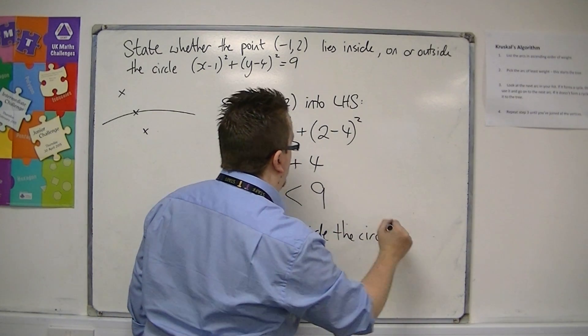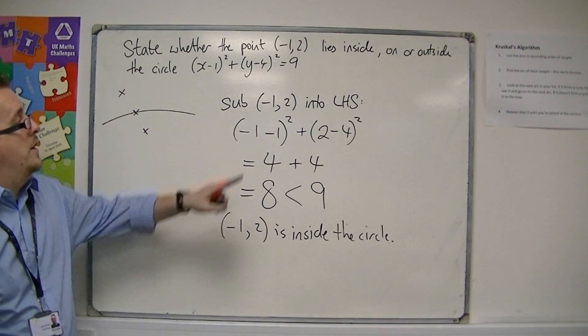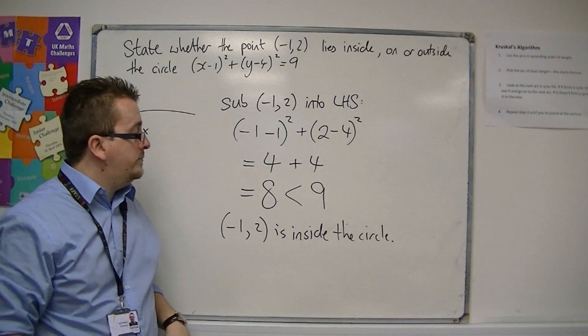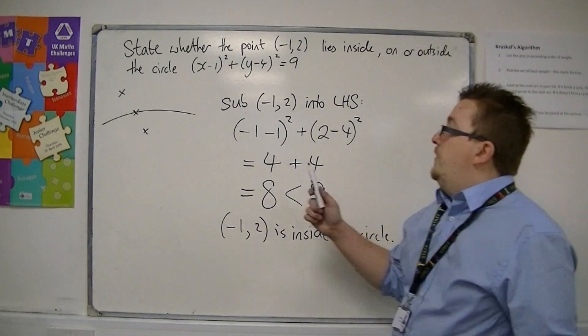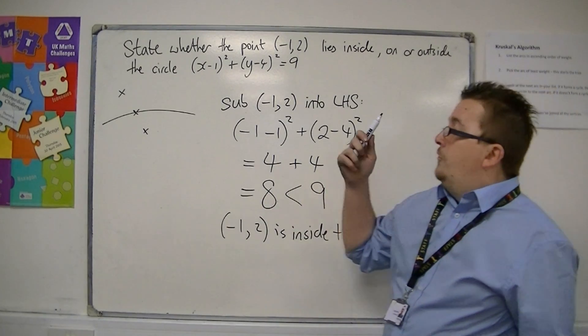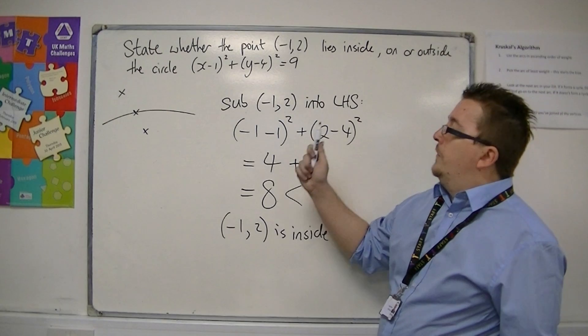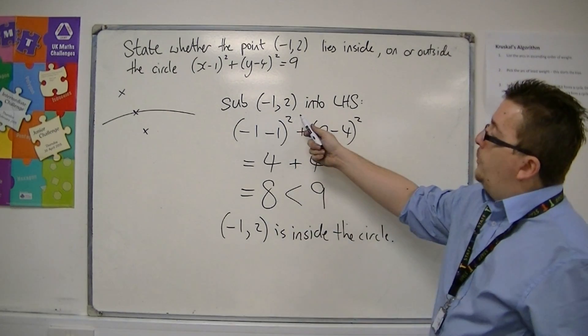You must compare it with the current value of r² in the equation. So what you're saying is that this point, the distance from the center of the circle to (-1, 2), is actually √8.